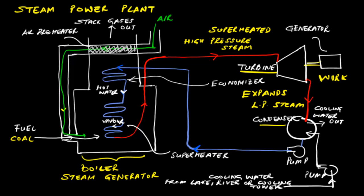In the condenser, heat is transferred from the steam that has exited the turbine to cooling water, causing the steam to condense. Steam power plants need a lot of cooling water and are therefore often located near lakes or rivers. Sometimes, a cooling tower is used where part of the condenser cooling water is evaporated to recover some water for cooling purposes.